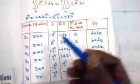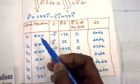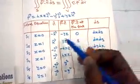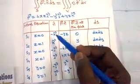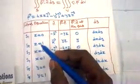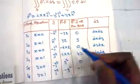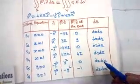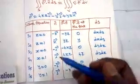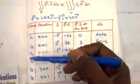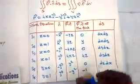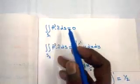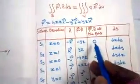For the surface element ds: S1 and S2 are parallel to the xy-plane so ds = dx dy. S3 and S4 are parallel to the yz-plane so ds = dy dz. S5 and S6 are parallel to the xz-plane so ds = dz dx. Now computing the double integral over S1: since f·n = 0 on S1, the integral over S1 equals 0.